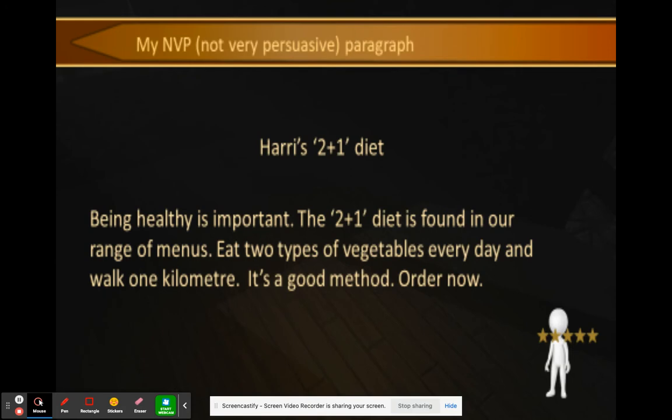Here's a not-very-persuasive paragraph: 'Harris's Two Plus One Diet — being healthy is important. The Two Plus One Diet is found in our range of menus. Eat two types of vegetables every day and walk one kilometer. It's a good method. Order now.' I'm not super persuaded because you're not telling me what types of vegetables to eat, how much to walk, or giving me any real specifics.